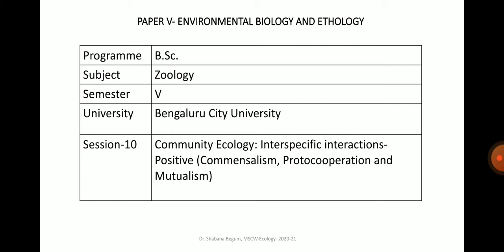In my previous lecture, I had discussed about the negative inter-specific interactions such as Antibiosis, Competition, Predation and Parasitism, where one or both the individuals are harmed. Such interactions are not harmful to the entire species or population — only the individuals interacting may be harmed. These interactions are also called Antagonism and are necessary to keep a check on the population.